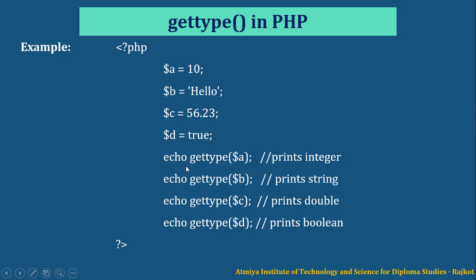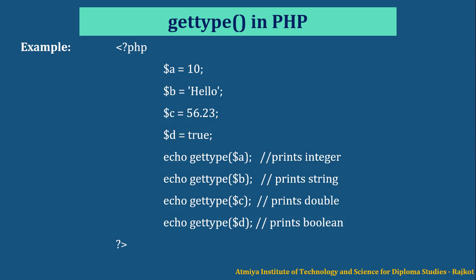For example, echo getType(a) — variable A has the value 10. As we know, PHP is a loosely typed language, so whenever we declare a variable, we do not give the data type. The value assigned to the variable determines the data type automatically. So variable A with value 10 is automatically assigned integer, variable B with a string value is automatically string, and same for variables C and D.